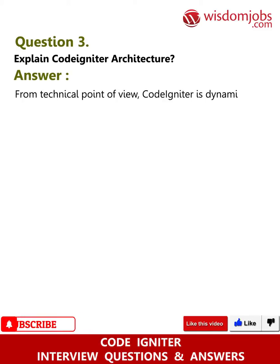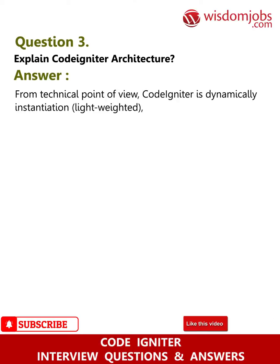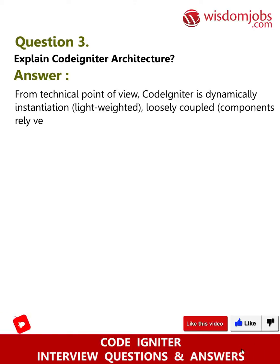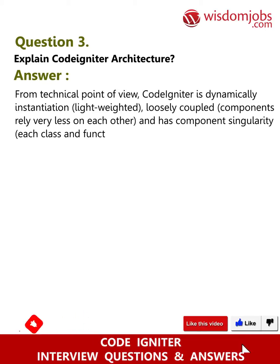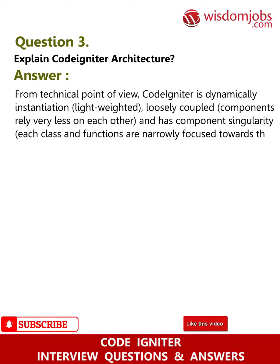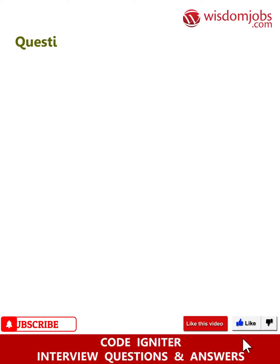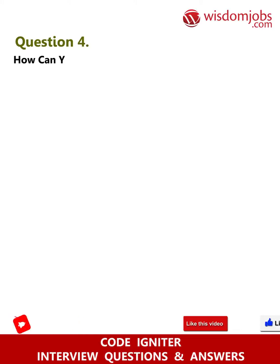Question 3: Explain CodeIgniter architecture. Answer: From a technical point of view, CodeIgniter is dynamically instantiated, lightweight, and loosely coupled — components rely very less on each other. It also has component singularity, meaning each class and function is narrowly focused towards its purpose.